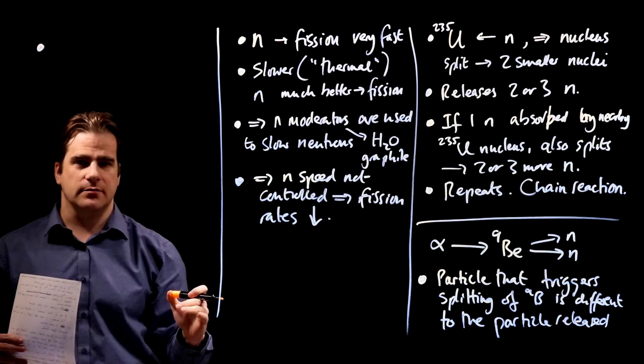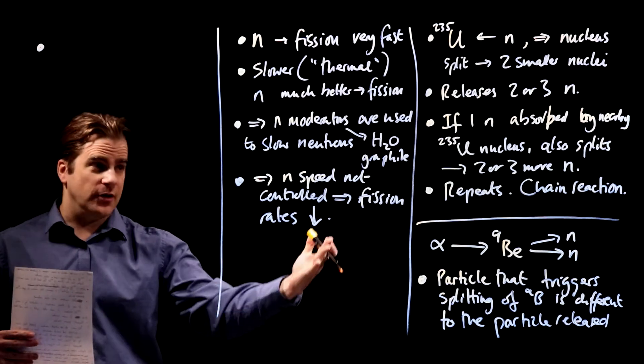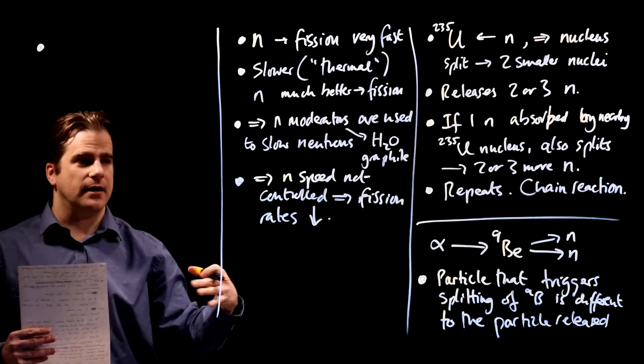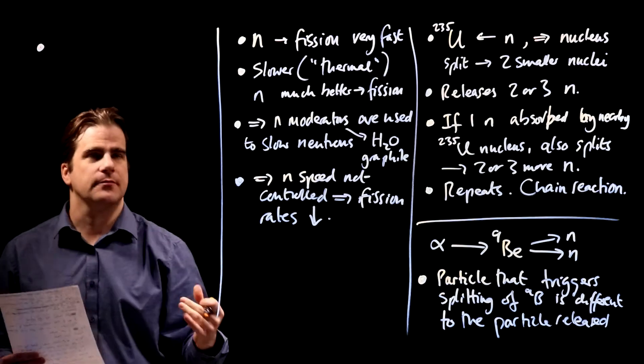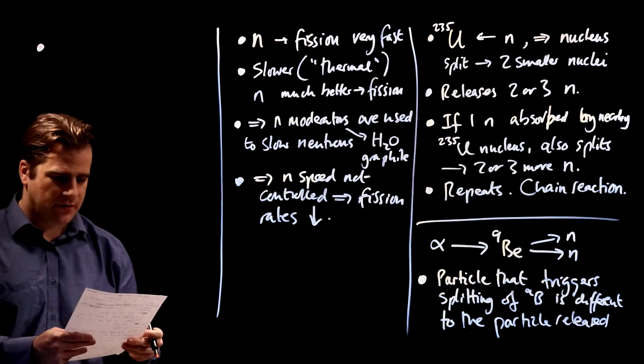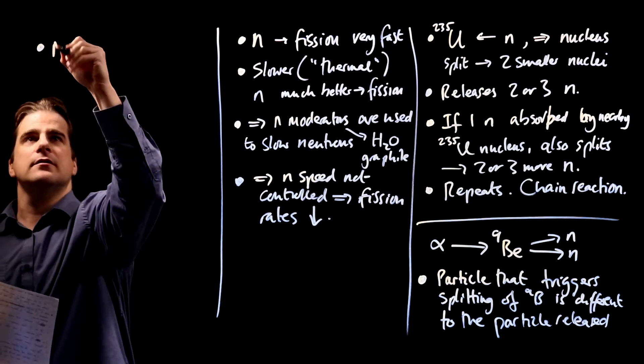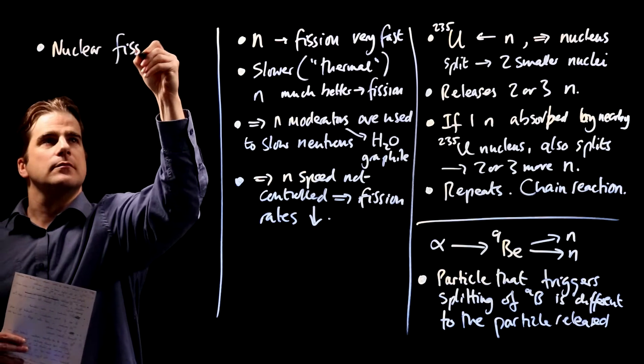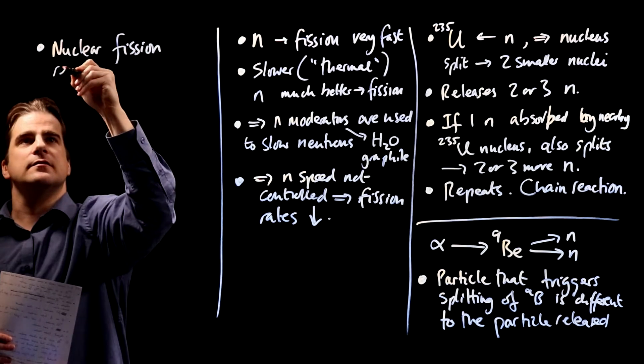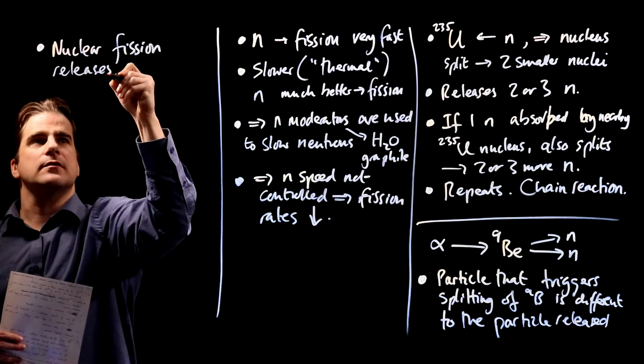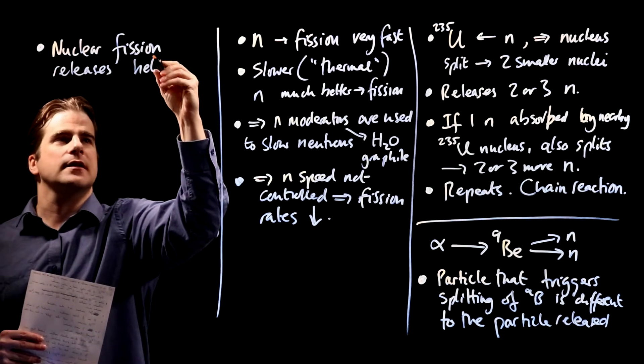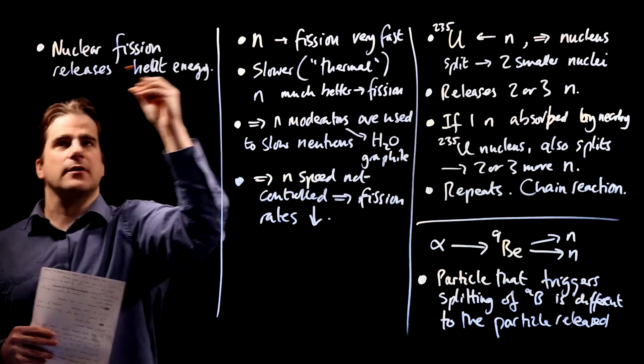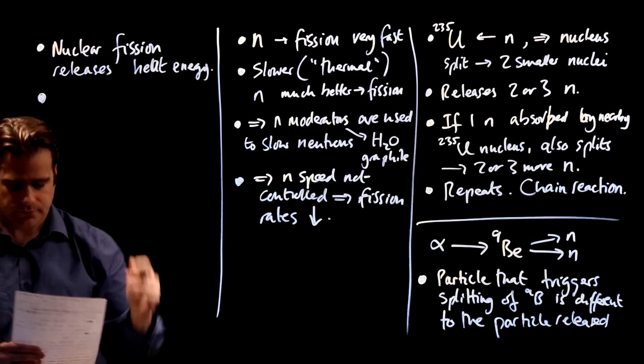Describe how the energy released in the chain reaction in a nuclear reactor is used to drive a turbine. Well, in a nuclear reactor, the reason we do fission is because it releases energy in the form of heat. So how are we going to say that? Just say nuclear fission releases heat, heat energy.